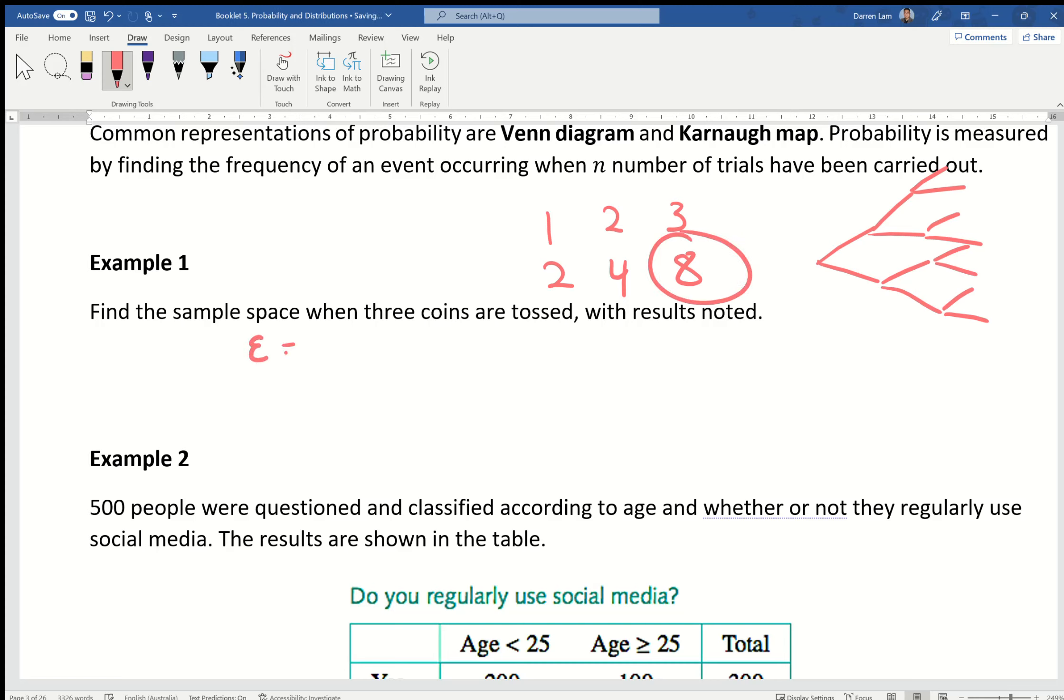Sample space epsilon equals heads heads heads, heads heads tails, I'm going to try and keep some sort of order to this, heads tails heads, tails heads heads, heads tails tails, tails tails heads, tails heads tails, and tails tails tails. We have eight, done.